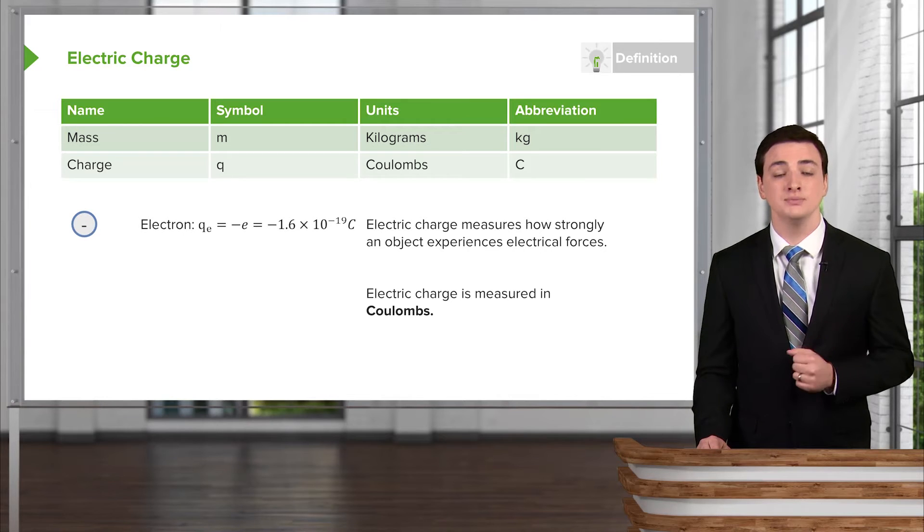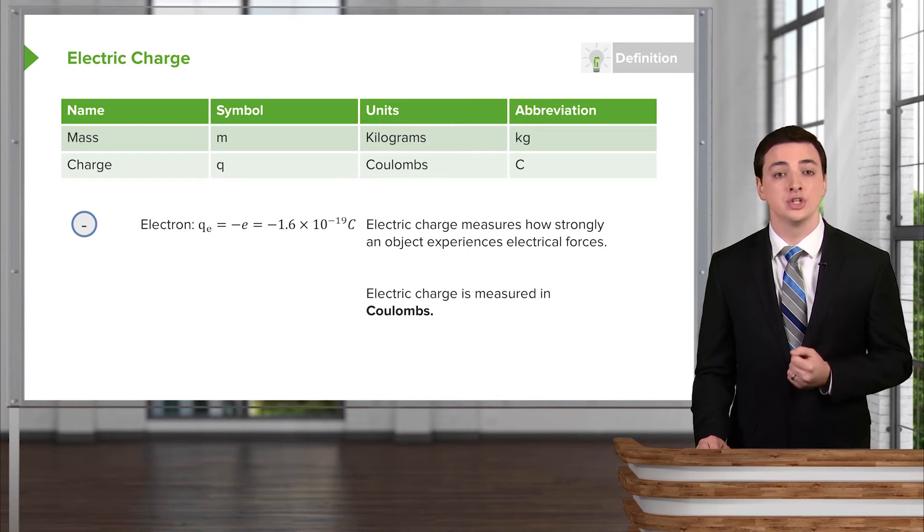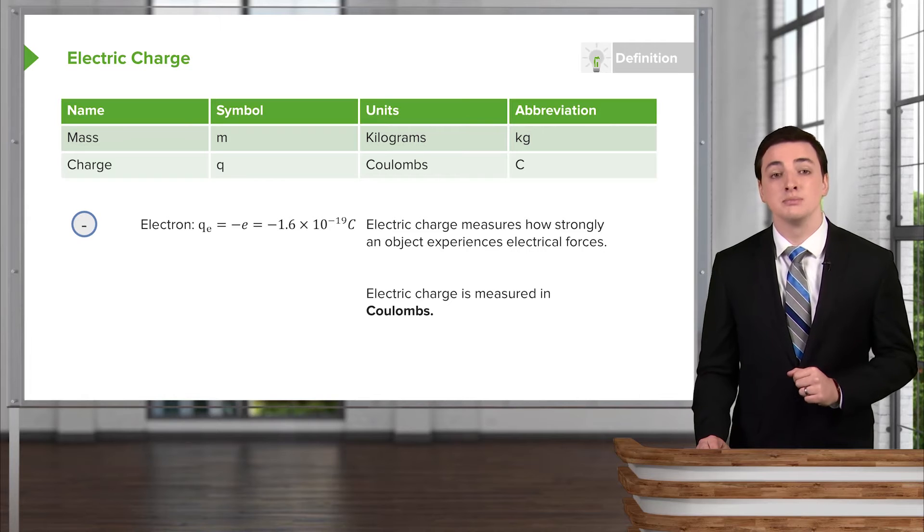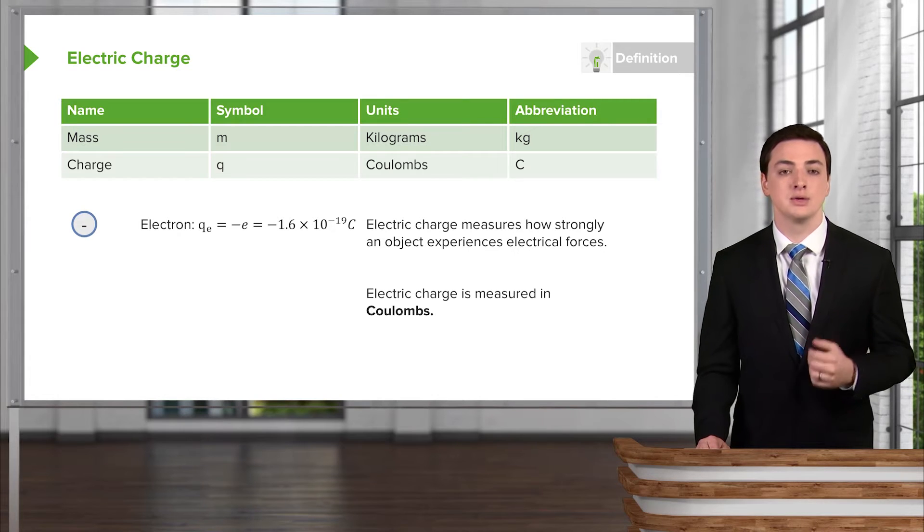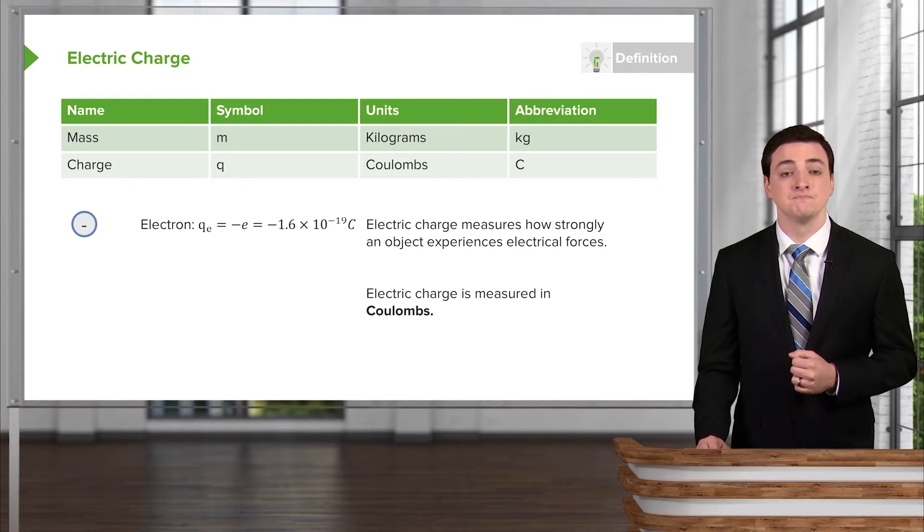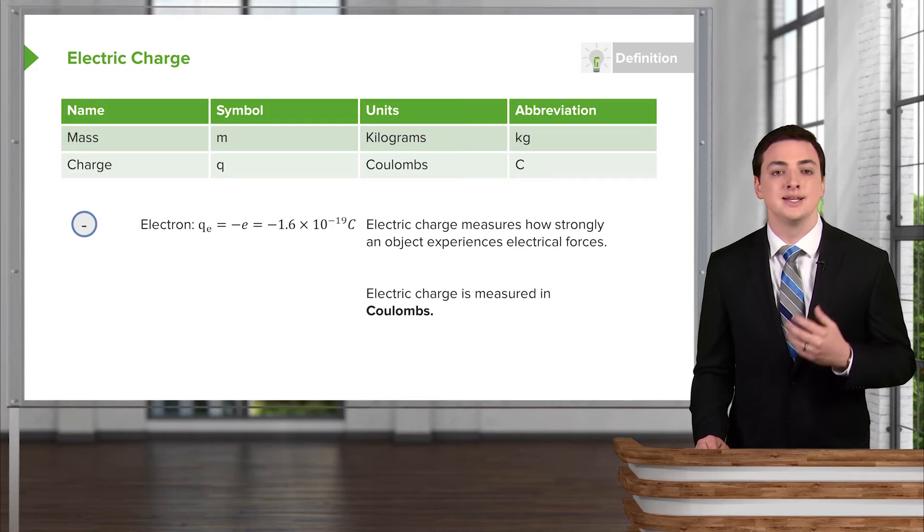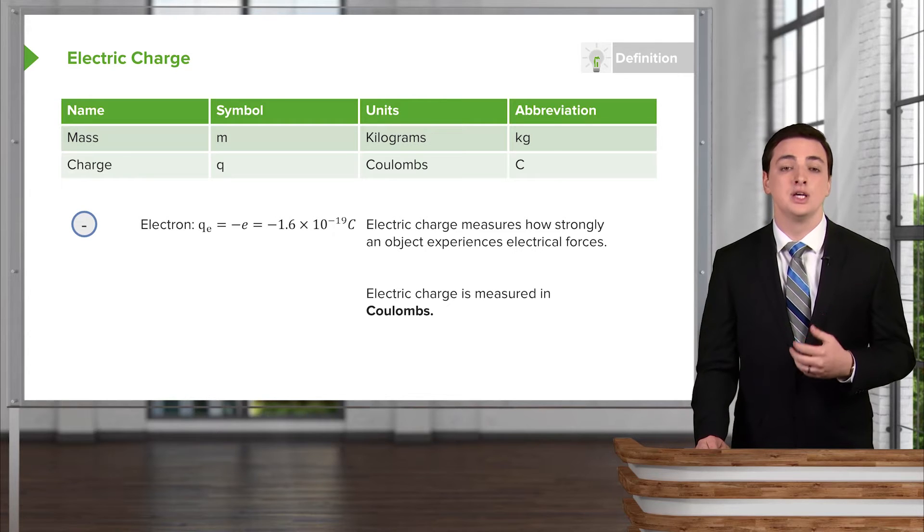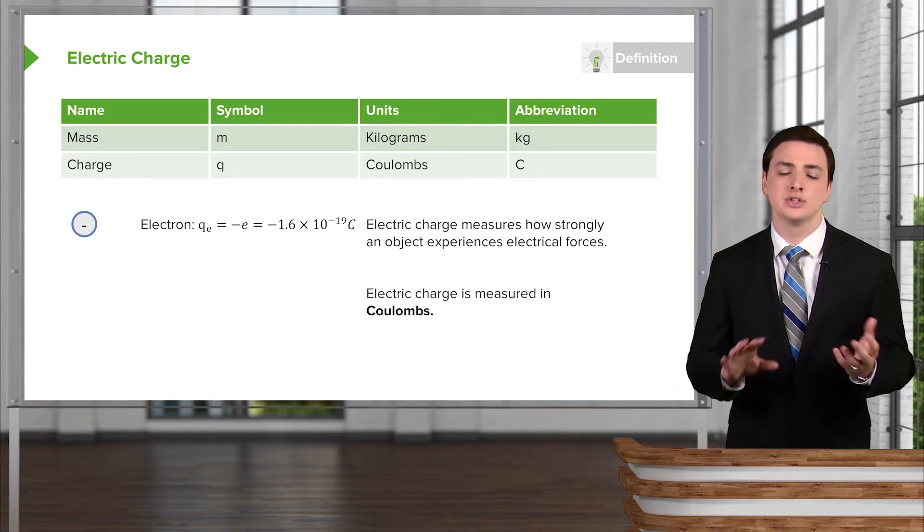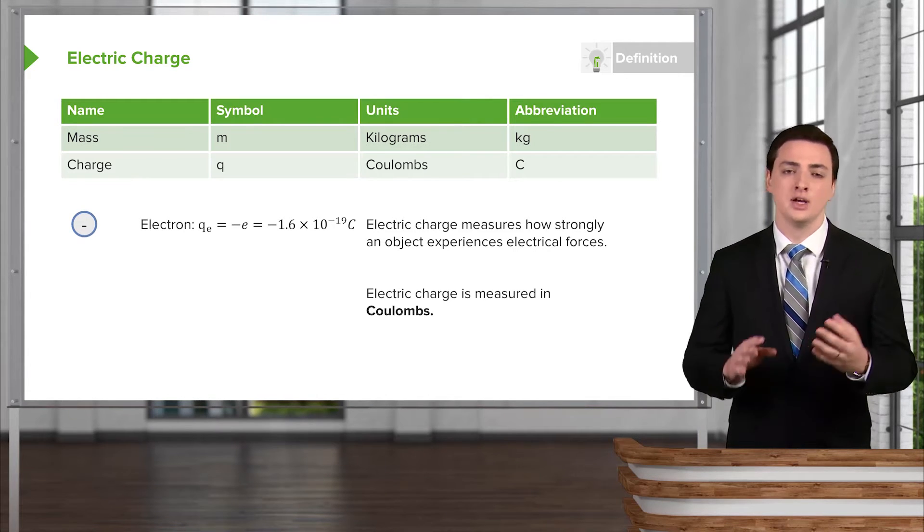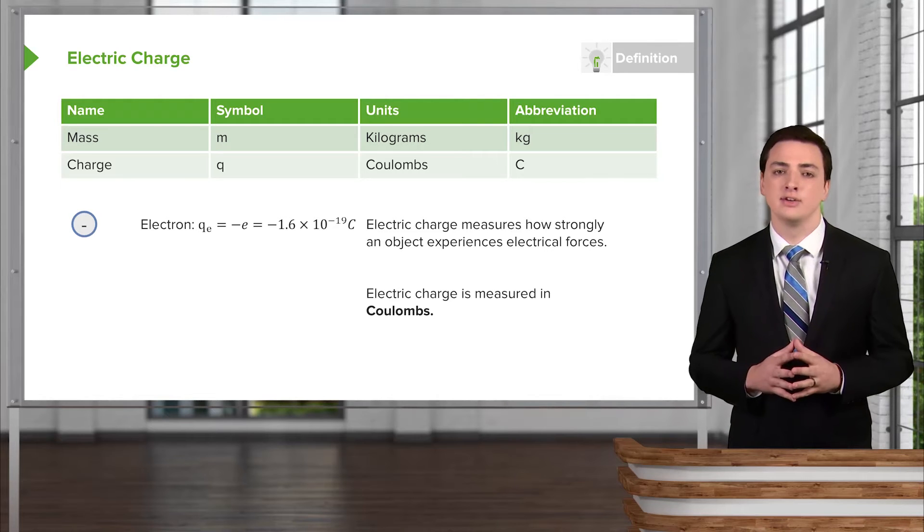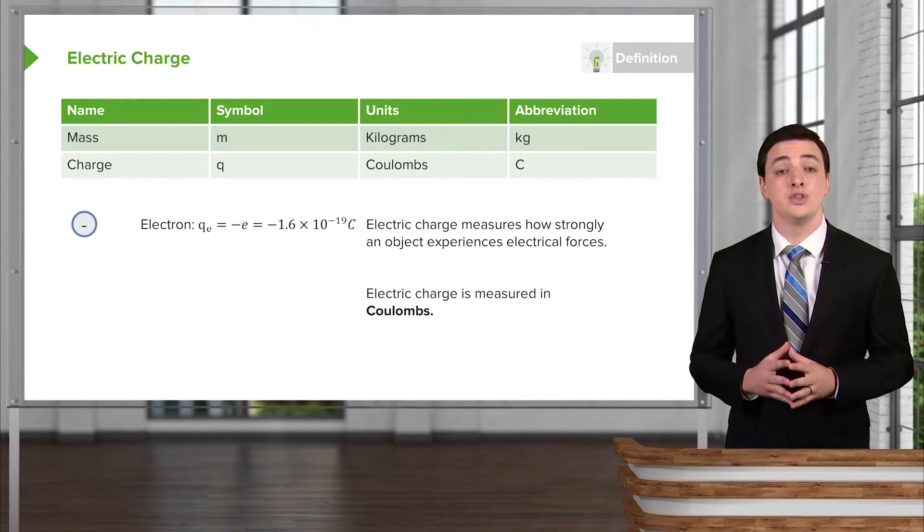For the electron, what we have is Q, the charge of the electron, with a little letter E written below the Q to indicate that we're talking about an electron. The charge of the electron is minus, it's a negative charge. And this is just by convention. There's nothing about the physics of nature that requires us to call a positive or a negative charge that way. It could have been the other way around.